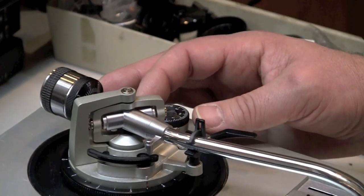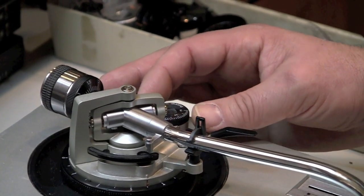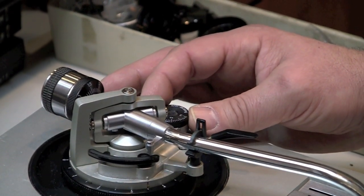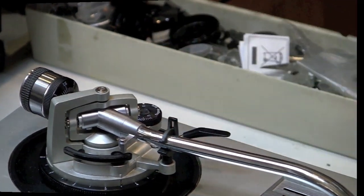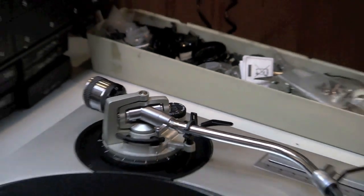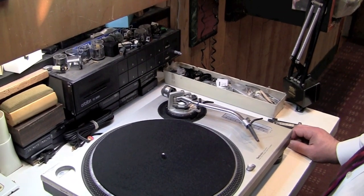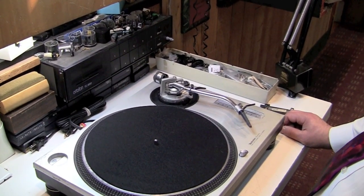A little more information: we will take the anti-skating and we will bring it about a half of a gram higher to two. How to balance a statically balanced tone arm. Thank you for watching.